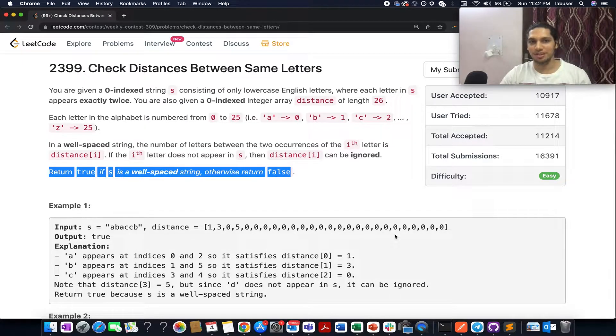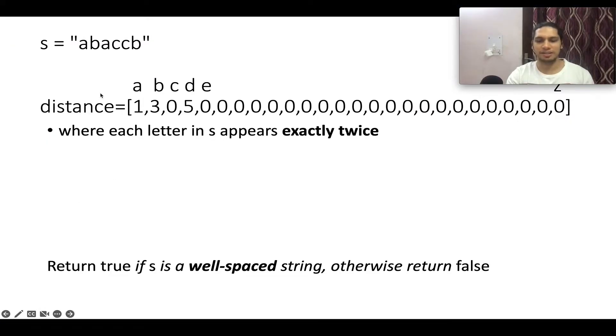The first problem I have chosen is check distance between same letters. This seems like a very easy question and I'll be explaining the question as well as the algorithm behind it. You are given a string and in this string each character appears exactly twice.